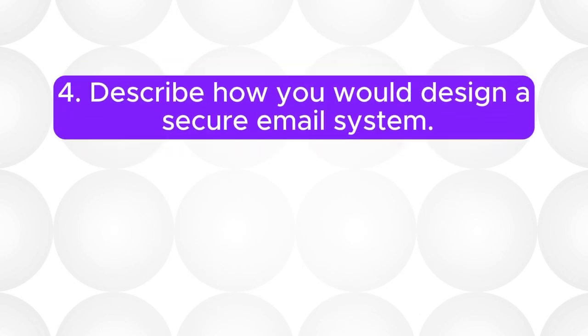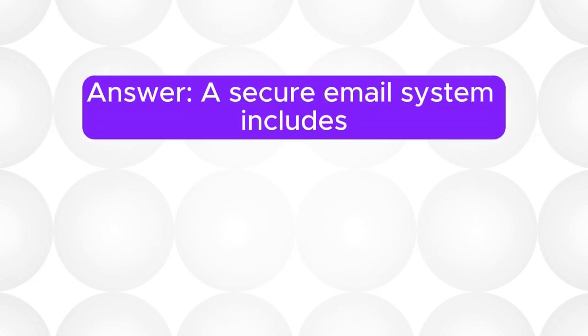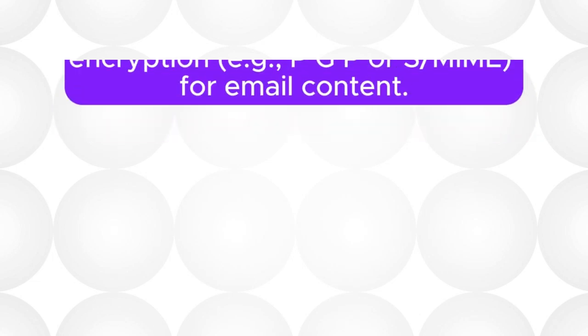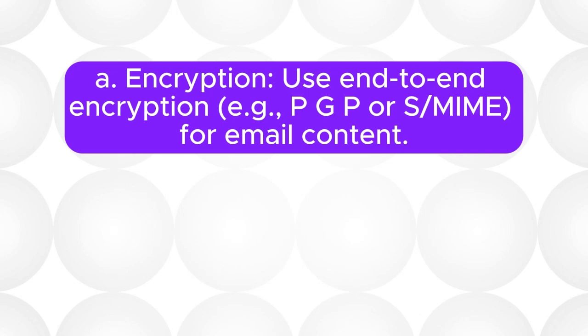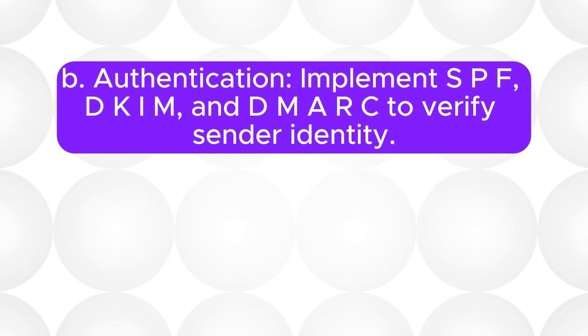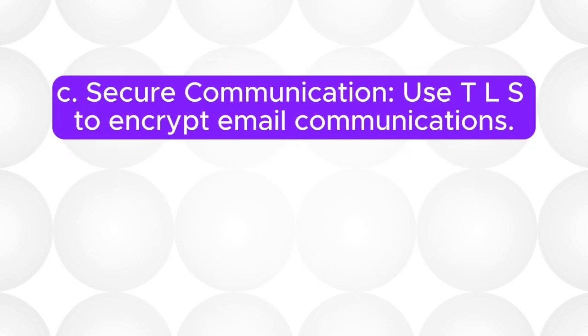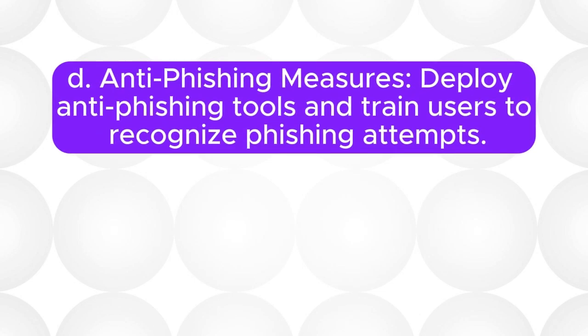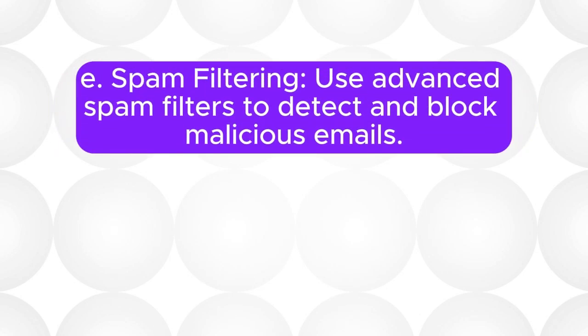Question 4: Describe how you would design a secure email system. A secure email system includes: (A) Encryption — use end-to-end encryption, for example PGP or S/MIME, for email content; (B) Authentication — implement SPF, DKIM, and DMARC to verify sender identity; (C) Secure communication — use TLS to encrypt email communications; (D) Anti-phishing measures — deploy anti-phishing tools and train users to recognize phishing attempts; (E) Spam filtering — use advanced spam filters to detect and block malicious emails.